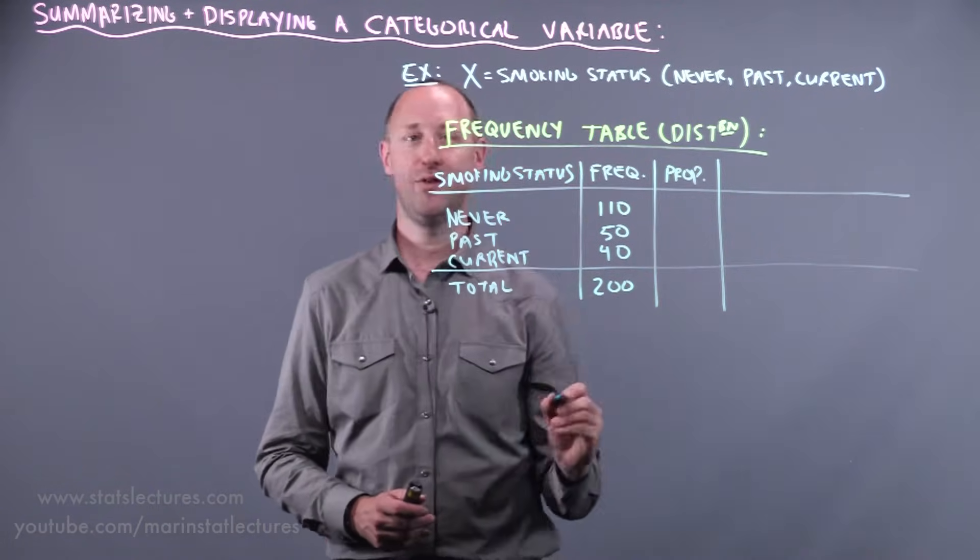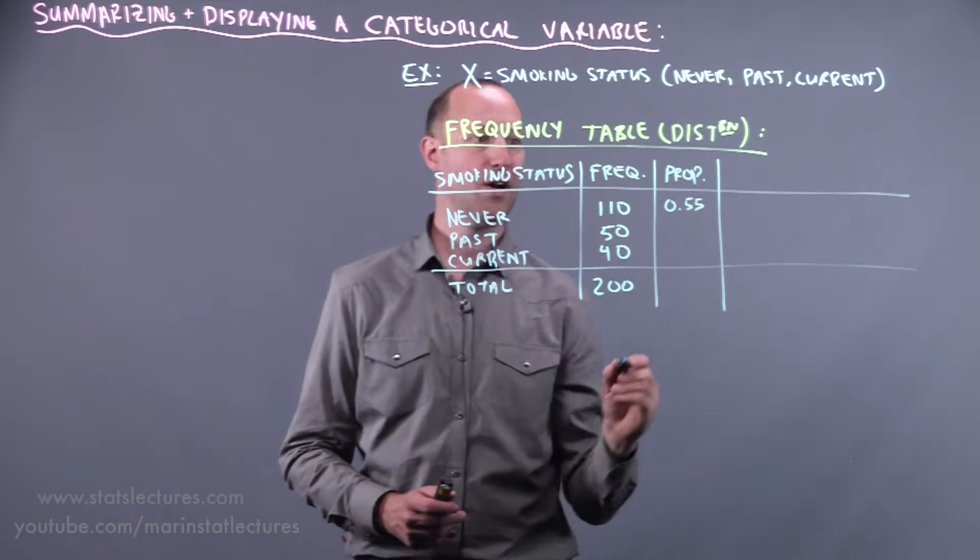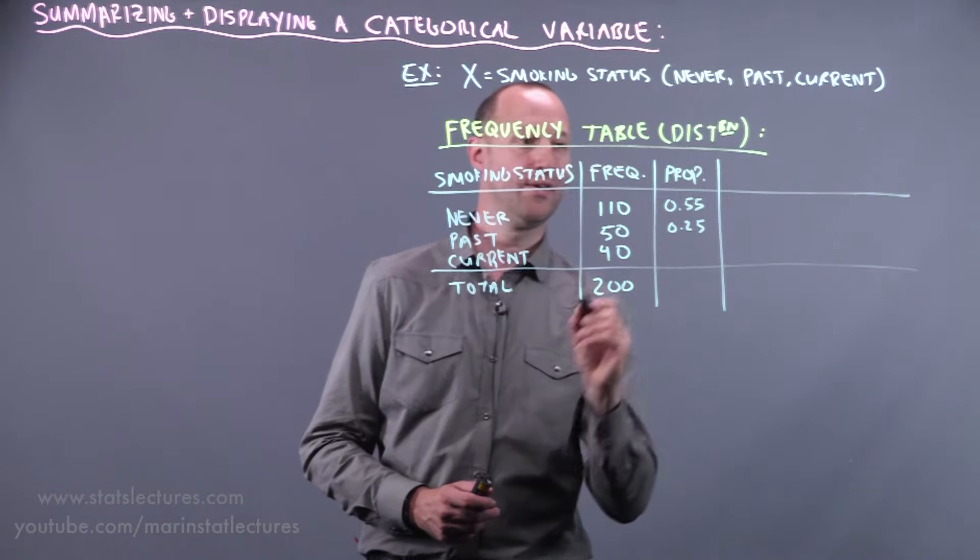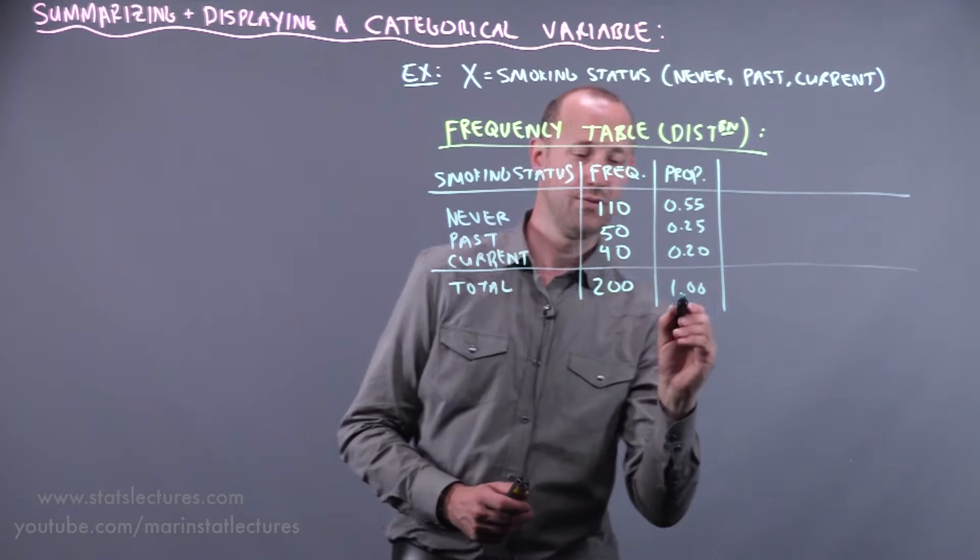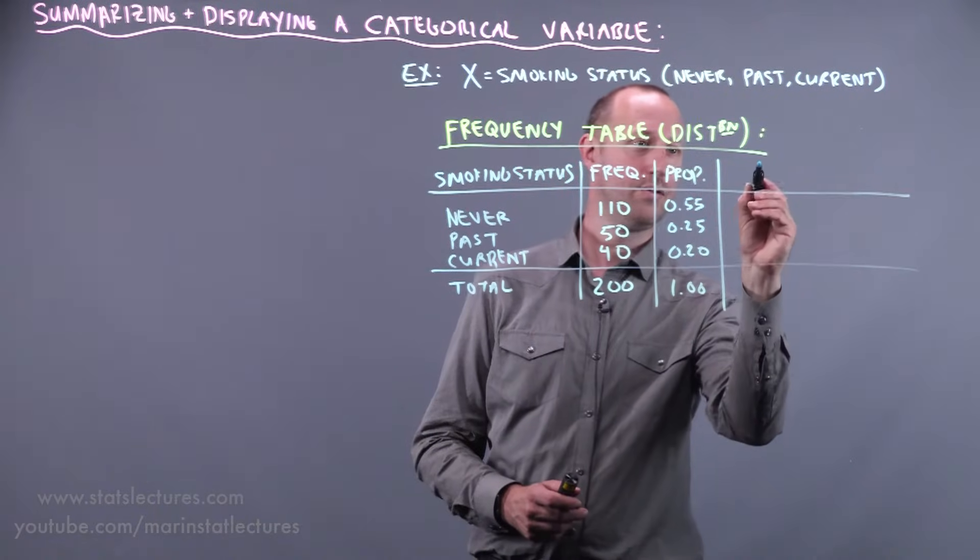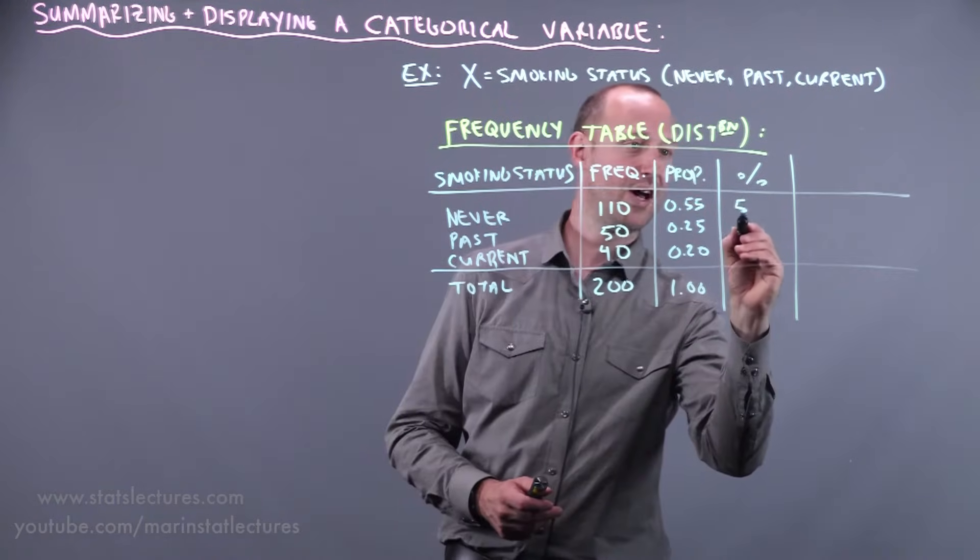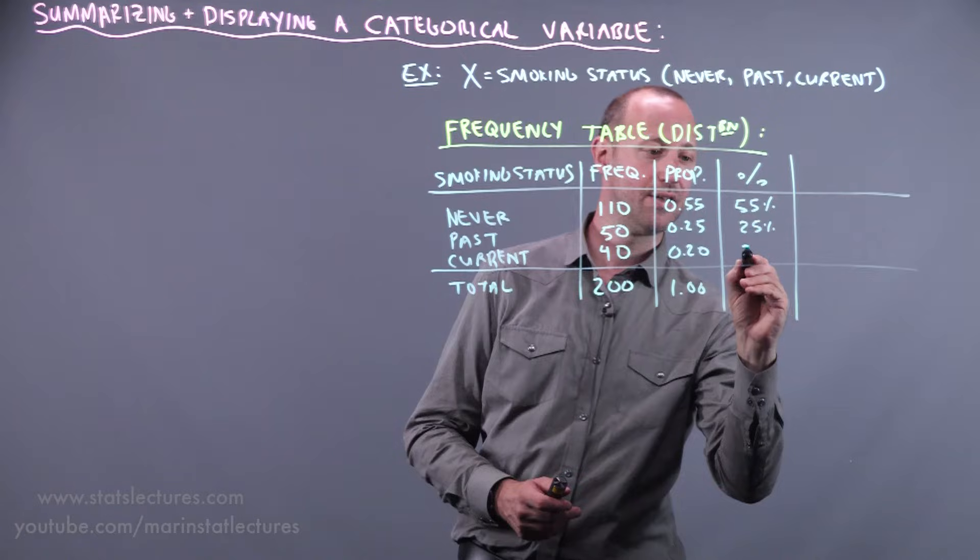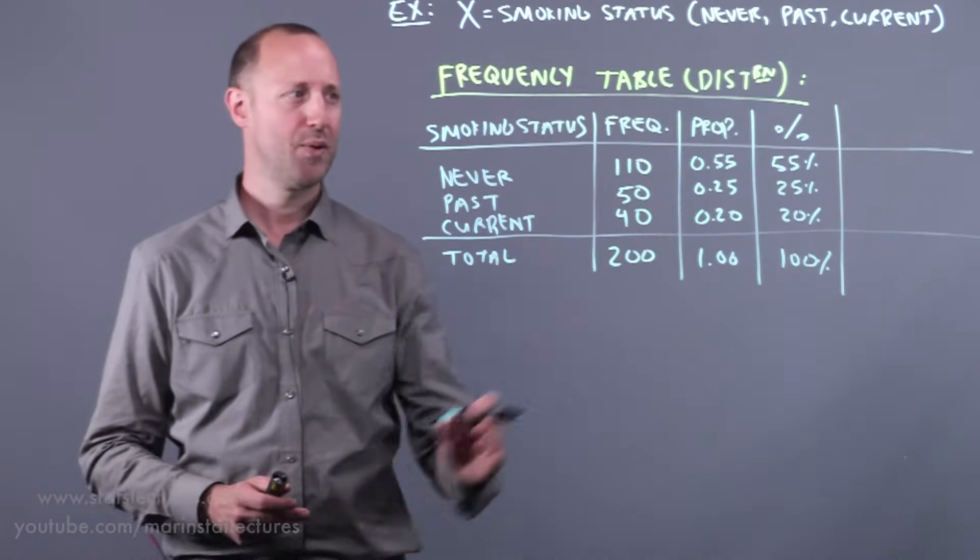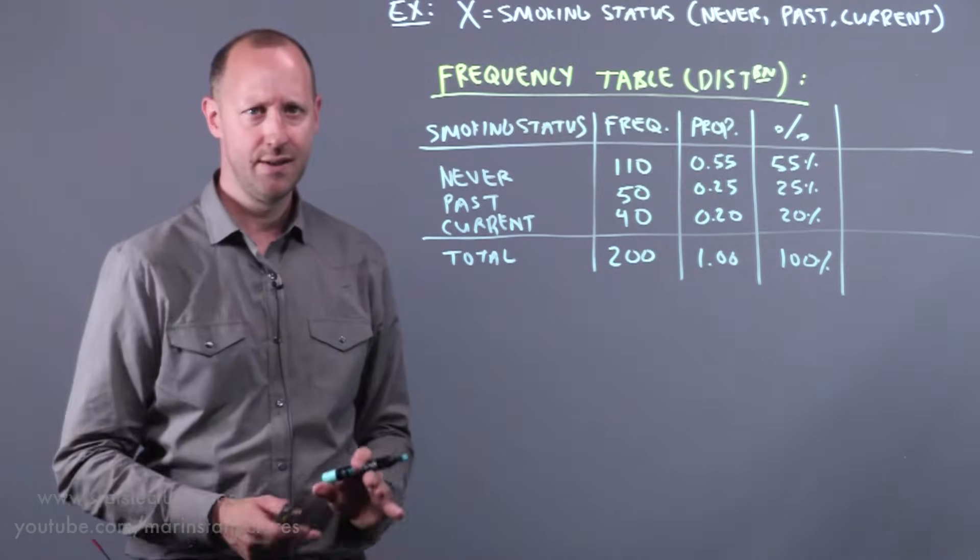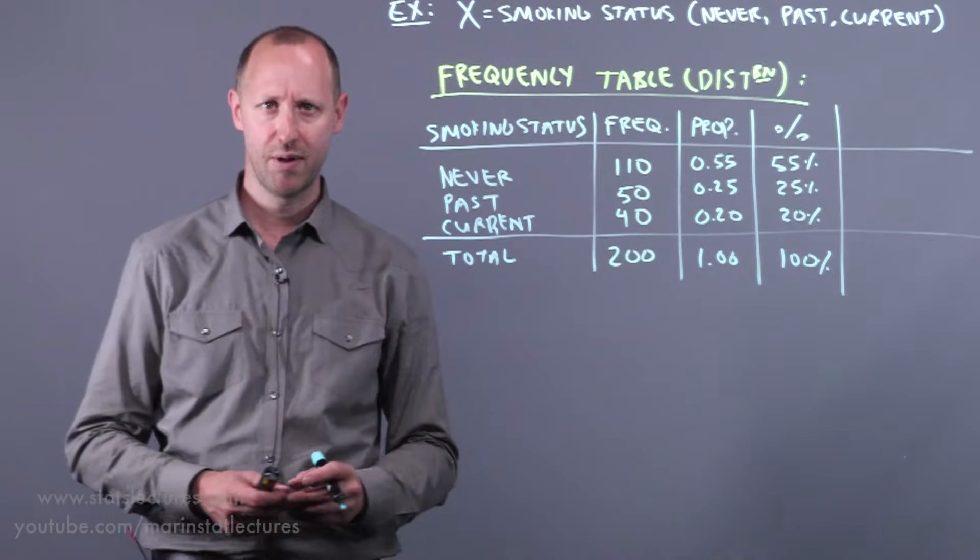The 110 out of the 200 is 0.55, the 50 out of the 200 is 0.25, and the 40 out of the 200 is 0.20, for a total of 1.0. Or we can also report these as percentages: 55%, 25%, and 20% out of the total 100%. For the most part, a proportion or percentage, while there are slight technical differences, we'll use the two interchangeably when we talk about things.